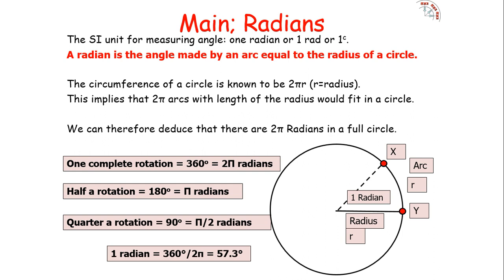The SI unit for angular displacement is the radian. A radian is the angle made by an arc equal to the radius of a circle. We know the circumference of a circle is 2πr, which implies that 2π arcs of length equal to the radius fit in a full circle. Therefore, there are 2π radians in a complete circle. So 360° equals 2π radians, 180° equals π radians, and 90° equals π/2 radians.